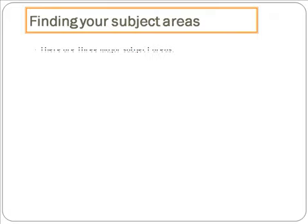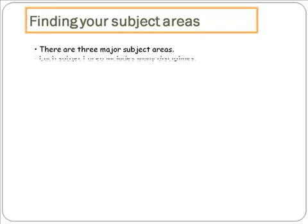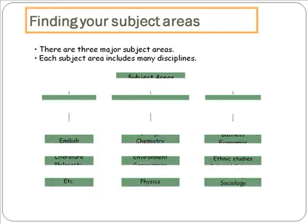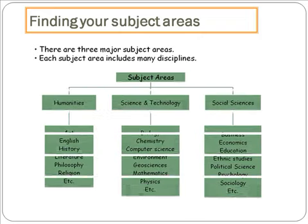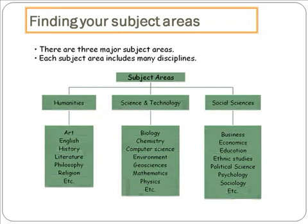Now let us move on to finding your subject areas. There are three major subject areas: Humanities, Science and Technology, and Social Sciences. Each subject area includes many disciplines. For example, Humanities include Art, English, and History.